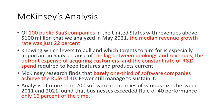That lag is important — our Splunk piece looked at it specifically. There's the upfront expense of acquiring customers and the constant rate of R&D spend to keep features current and fend off competitors. McKinsey research finds that barely one-third of software companies achieve the Rule of 40, and fewer still manage to sustain it. In a study of 200 software companies over 10 years, businesses exceeded Rule of 40 performance only 16% of the time — so it's genuinely difficult to achieve.